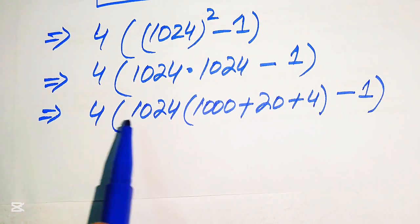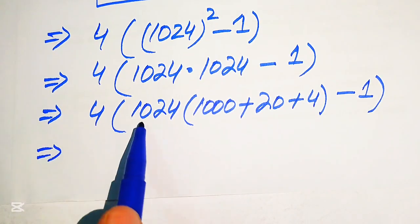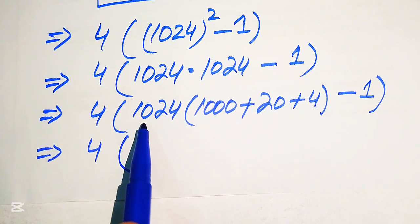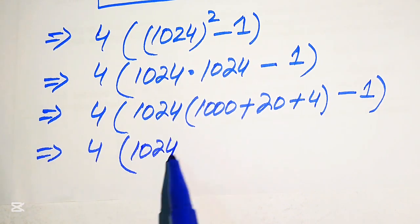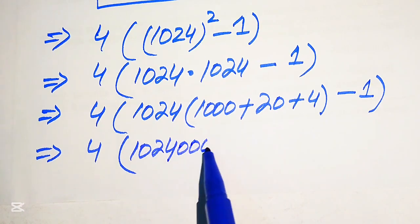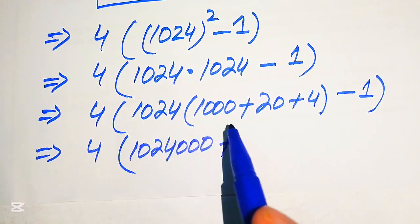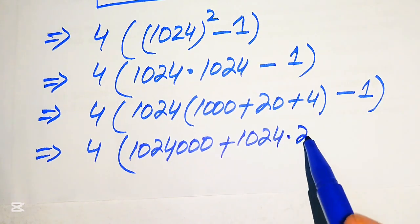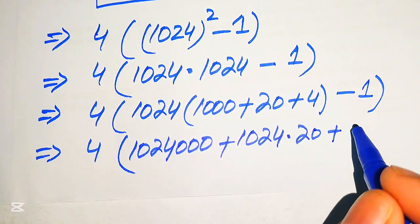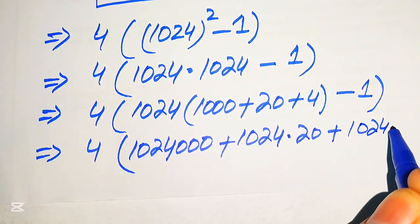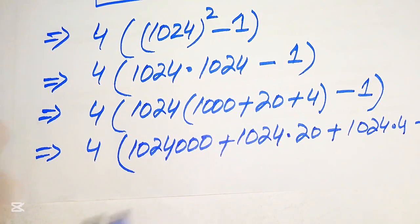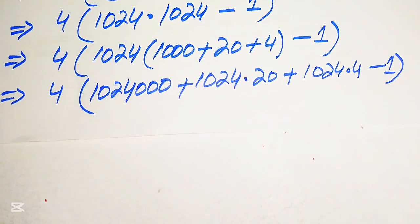We now multiply 1024 by each of these values. When you multiply 1024 by 1000 you get 1024 with three zeros appended. Then we multiply 1024 by 20, and finally we multiply 1024 by 4. At the end we subtract 1 from the resulting sum.